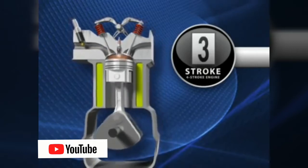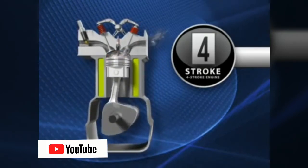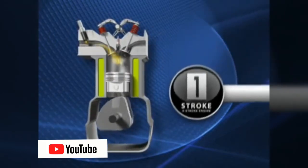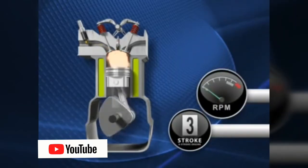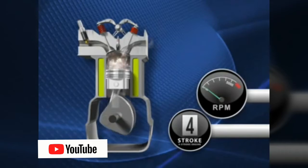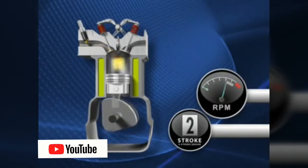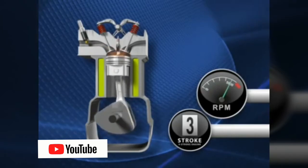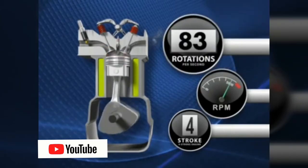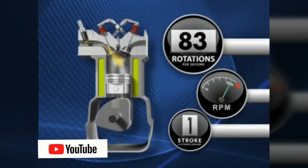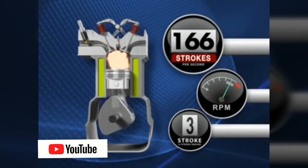It takes one up and down motion, or two strokes of the piston, to create one revolution of the crankshaft. RPM, or revolutions per minute, is how many times the crankshaft rotates within that minute. At wide open throttle, the crankshaft may turn at 5,000 RPM — a dizzying 83 times per second — while the piston traveled up and down 166 times in that same second.